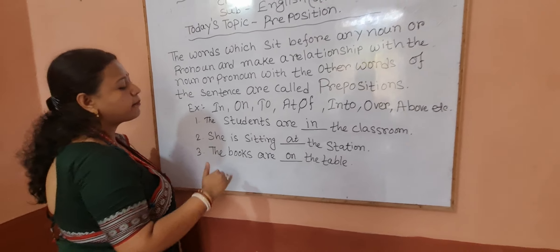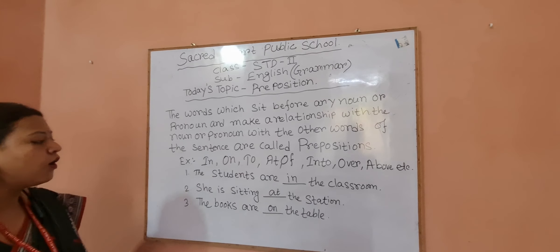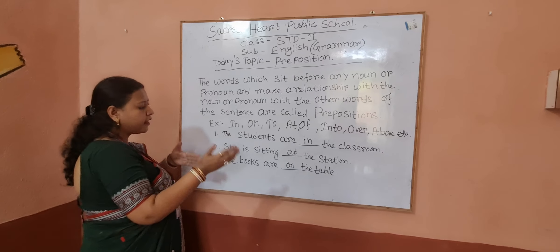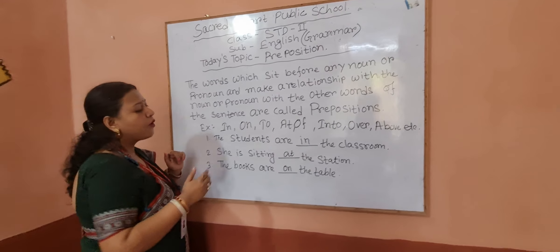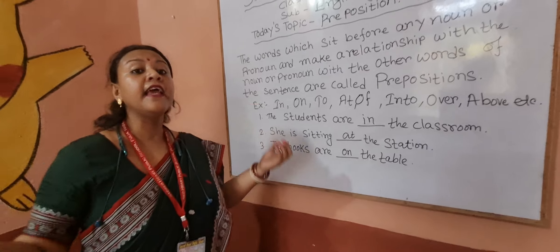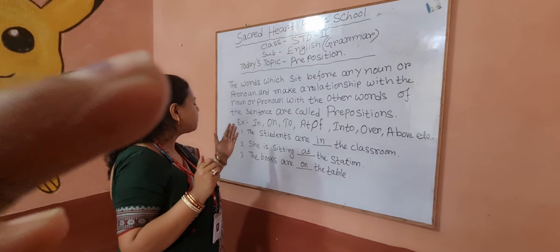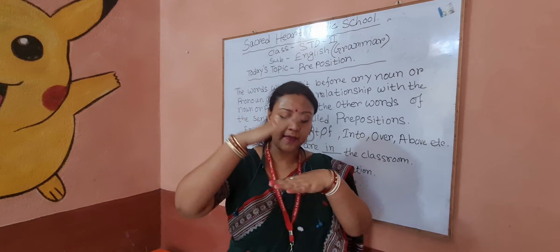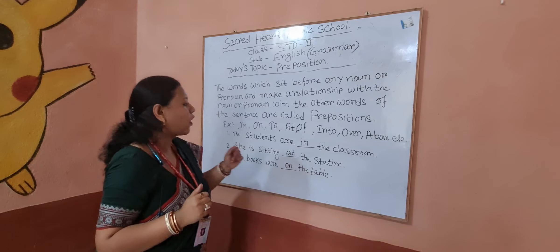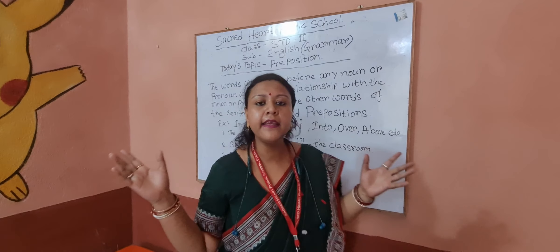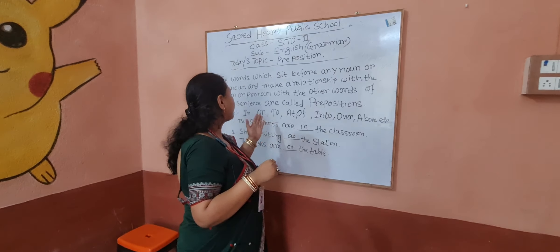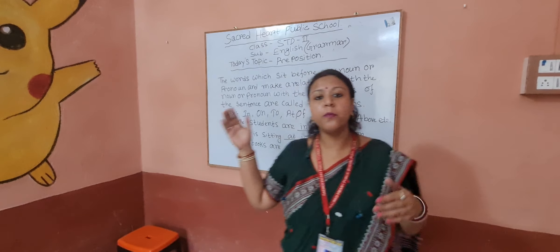It makes a relationship of the book with the table. These are the prepositions — they sit before any noun and make the relationship of the noun with the other words of the sentence. We use 'in' to describe anything inside something, and we use 'on' to describe something that has a touch with the thing.